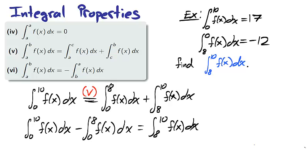Subtracting the integral from 0 to 8 from both sides and using property 6, we switch the bounds to 8 to 0 and change the sign from negative to positive. Therefore, the integral from 8 to 10 of f is 17 plus negative 12, or 5.